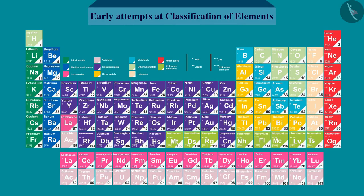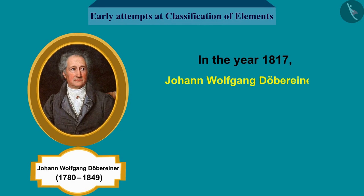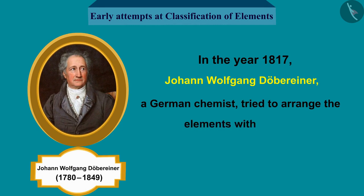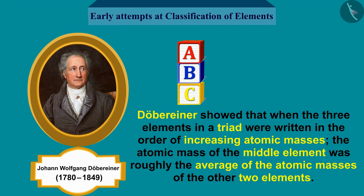We will now describe the various attempts made to classify the elements from time to time. In the year 1817, Johann Wolfgang Döbereiner, a German chemist, tried to arrange the elements with similar properties into groups. He identified some groups having three elements each, so he called these groups triads.